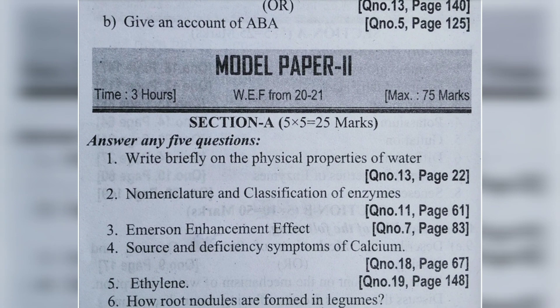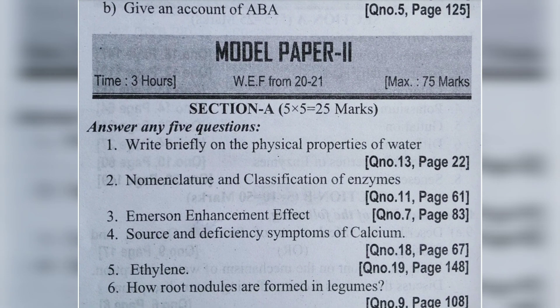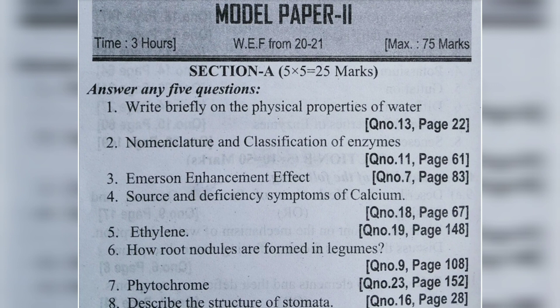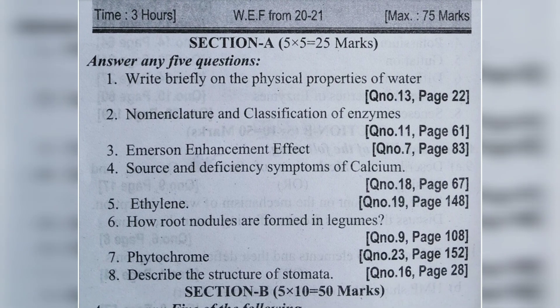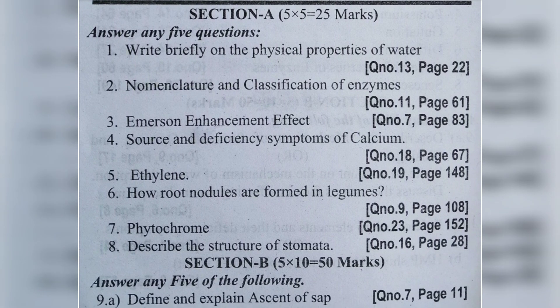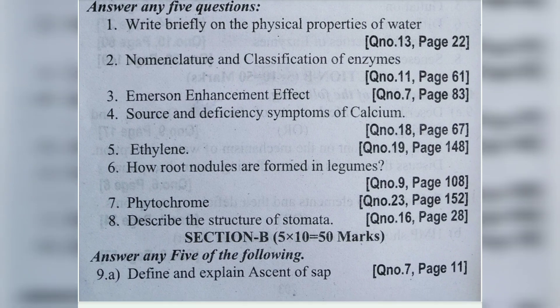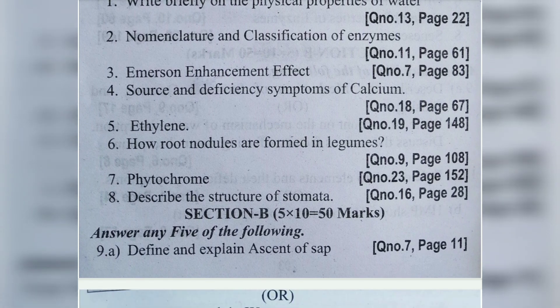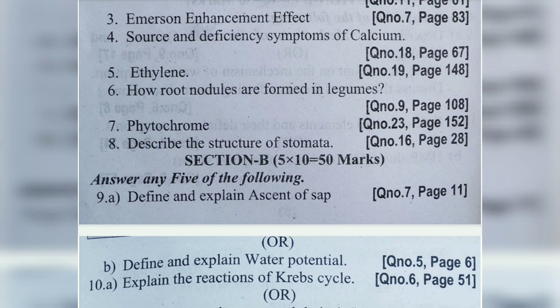Model Paper 2 short questions: write briefly on the physical properties of water - very important question. Also: nomenclature and classification of enzymes, Emerson enhancement effect, source and deficiency symptoms of calcium, ethylene, how root nodules are formed in legumes, phytochrome, describe the structure of stomata. Question 9a: define and explain ascent of sap. Question 9b: define and explain water potential. Ascent of sap has a detailed explanation with pictures and notes - video link is in the description.